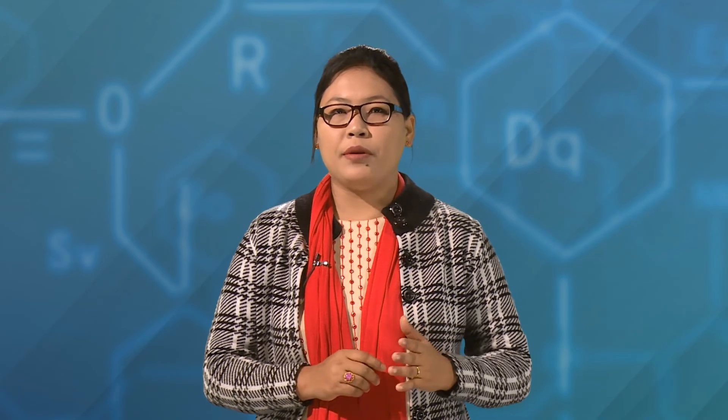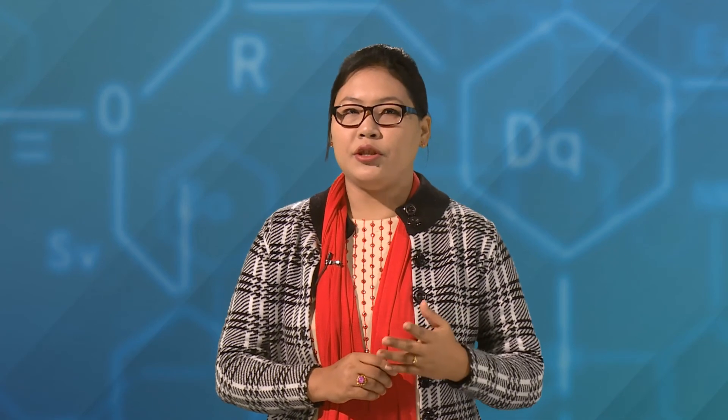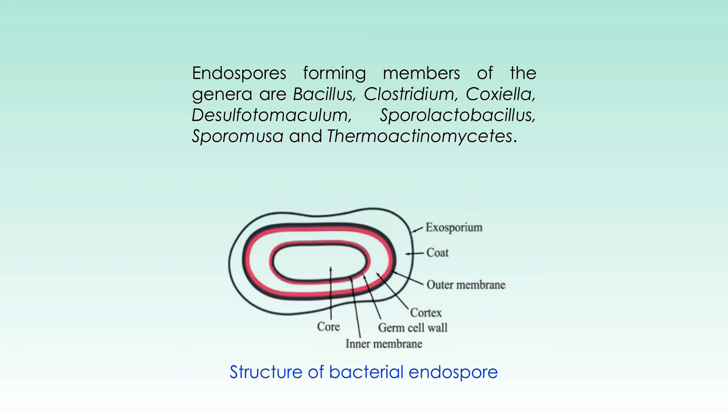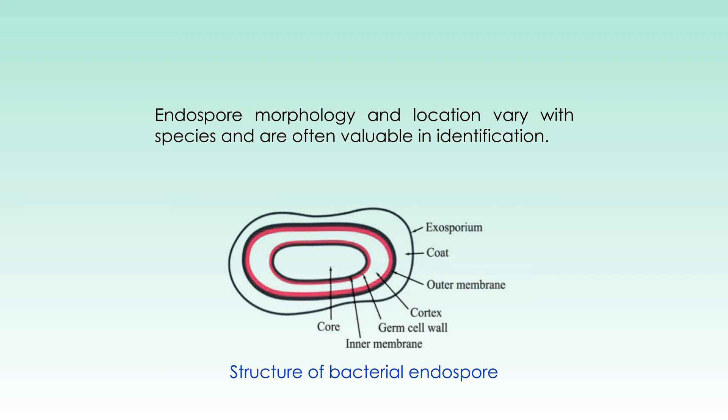Bacteria usually grow and multiply under favorable environmental conditions. However, because of certain unfavorable conditions such as nutrient depletion and extreme temperature, bacteria are capable of changing into dormant structures that are metabolically inactive and cannot reproduce, which are called endospores. These structures are remarkably resistant to heat, radiation, and chemicals. Endospore-forming members of the genera include Bacillus, Clostridium, Coxiella, Desulfotomaculum, Sporolactobacillus, Sporomusa, and Thermoactinomyces. Endospore morphology and location vary with species and are often valuable in identification.